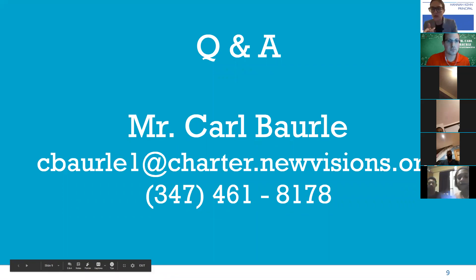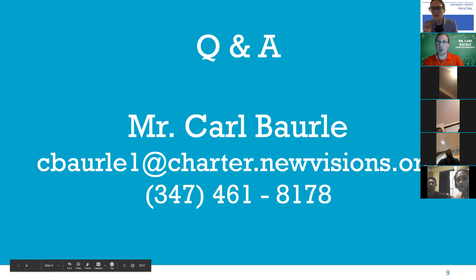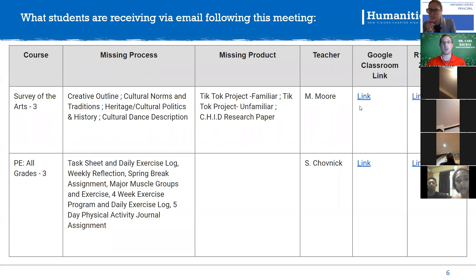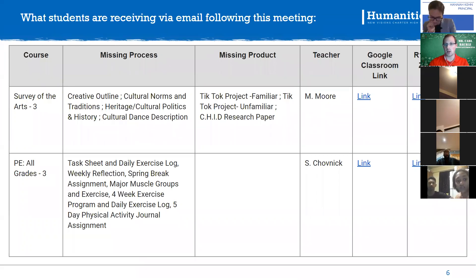Mr. Bowerly, can you clarify when you emailed students the information? The last time students were emailed was October 28th, but I will be emailing them again after this meeting. Every single student will get a table like this in their email — the courses and assignments will be different for each student. They'll get individual information with the link to the R1 Reflection and the link to their Google Classrooms, including the names of the assignments and where to find them.